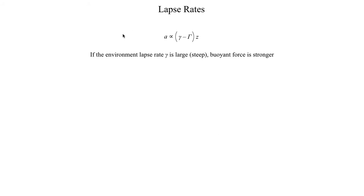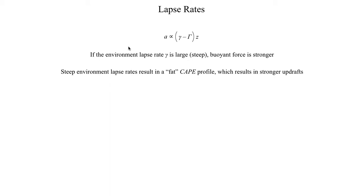This is something we just illustrated mathematically. If the environmental lapse rate is very large — another term for that is a steep lapse rate — then you're going to have a much stronger buoyant force, which means a much stronger upward acceleration and potentially much stronger updraft speeds. Usually when you have steep environmental lapse rates, that's much more likely to give you a fat CAPE profile — more CAPE over less depth in the atmosphere — which is much more likely to give you stronger updrafts.